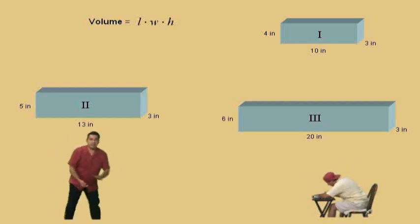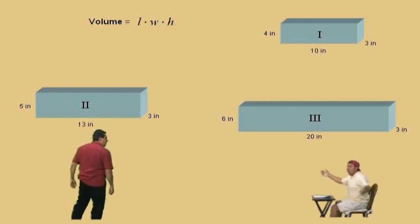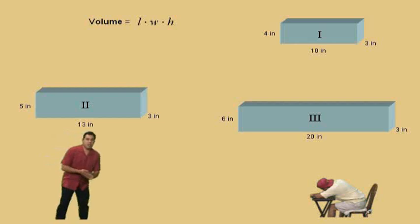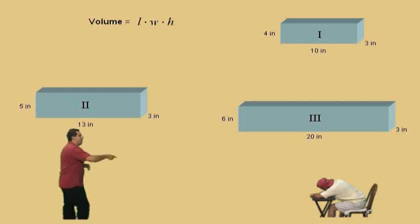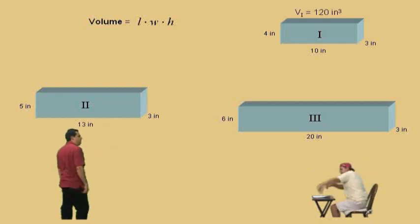Okay, now we're going to go ahead and calculate the volumes. Remember, the formula for volume is length times width times height. There it is up there, Charlie. Write it down twice. That's right. Okay, now let's find the volume for rectangular solid one. Go ahead, Charlie, how do you find the volume? Remember, length times width times height. All right, so what is it, Charlie? 120 inches cubed. Very nice, Charlie, very good.